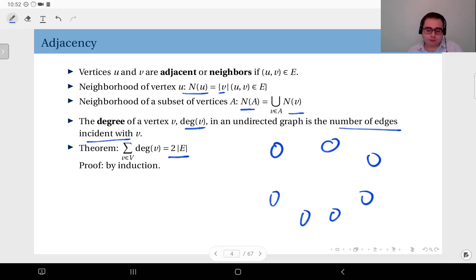In the inductive step, you add one edge like this one. When you add an edge, the sum on the left hand side is incremented by two because the degree of this vertex is incremented by one and the degree of this vertex is also incremented by one. The right hand side, since you add just one edge and multiply this by two, is also incremented by two. Therefore by induction this theorem is true.